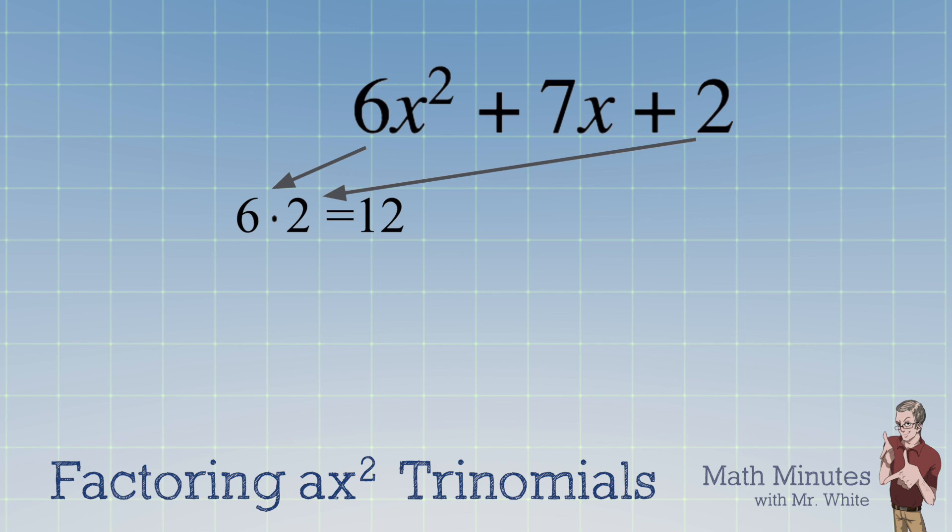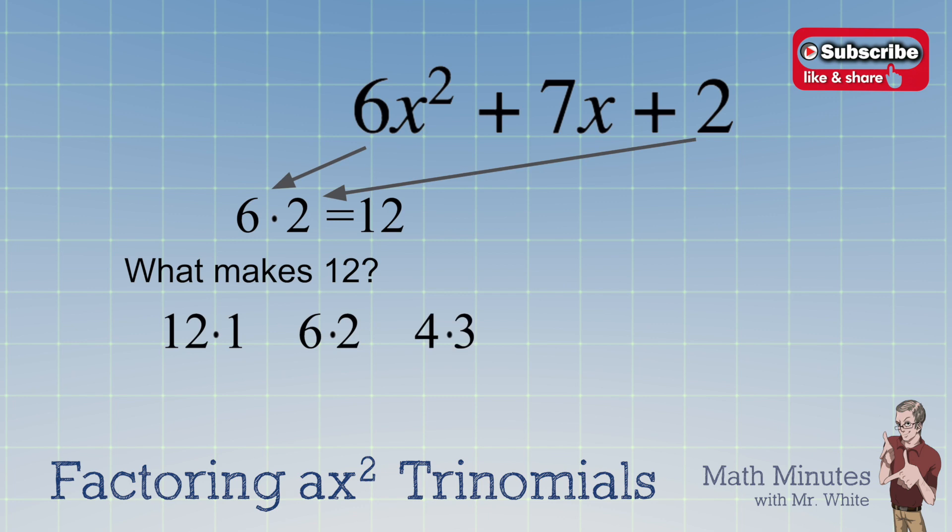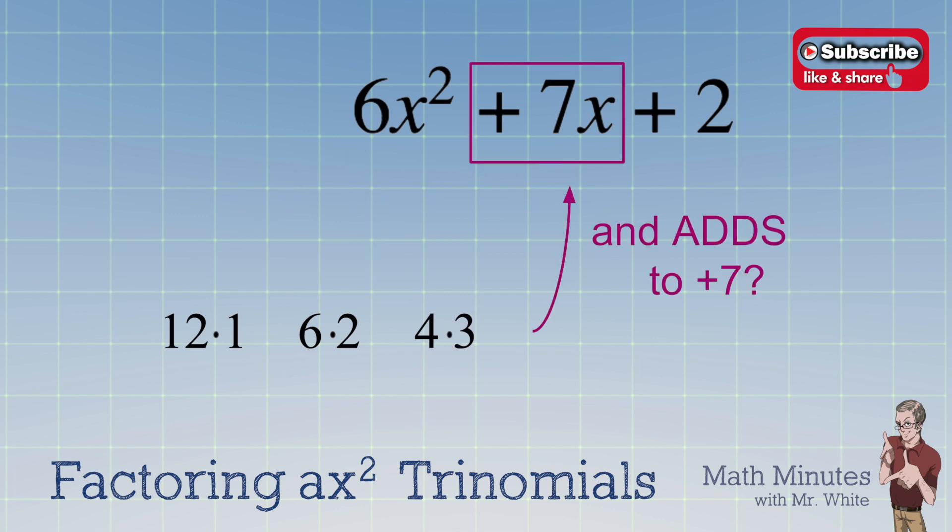The next step is to look at all the ways that we can make 12 through multiplication. So 12 times 1, 6 times 2, 4 times 3. Now, just ask yourself, which of those pairs of numbers adds to be the middle term, which happens to be 7x? Aha! It's 4 plus 3.